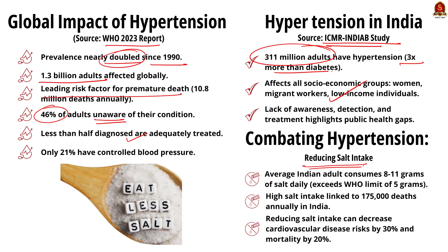One of the simplest remedies to reduce hypertension is to cut down excessive salt consumption. The average Indian adult consumes 8 to 11 grams of salt per day, far exceeding the WHO recommended limit of 5 grams. This high salt intake is linked to an estimated 1,75,000 deaths in India each year.